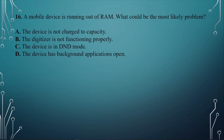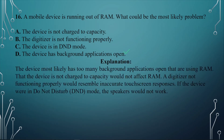Question number sixteen: A mobile device is running out of RAM. What could be the most likely problem? A. The device is not charged to capacity. B. The digitizer is not functioning properly. C. The device is in DND mode. D. The device has background applications open. The answer is D, multiple applications open in the background. This tends to consume RAM and slow the device, since RAM helps things speed up.